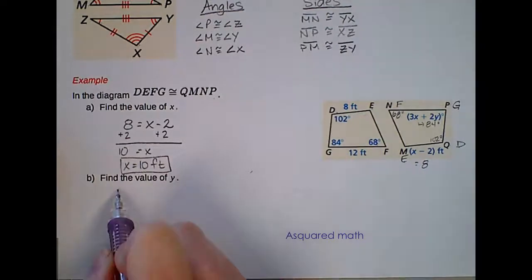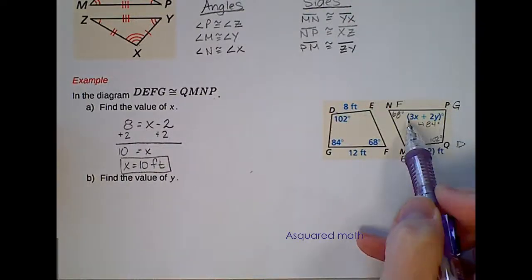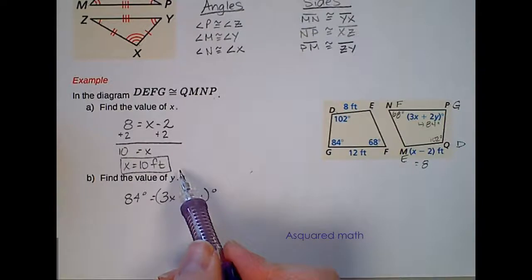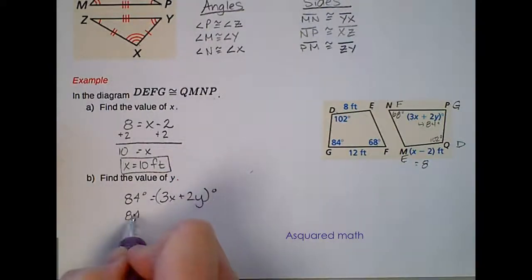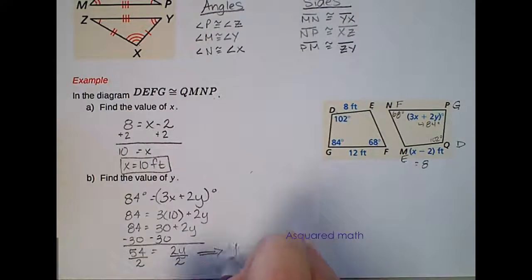Part B is asking us to solve for Y. Now this equation is the only one that has Y in it. So we can say that 84 degrees equals 3X plus 2Y degrees. We know our value for X is 10 feet. So let's substitute in 10 for X. We will get 84 equals 3 times 10 plus 2Y. 84 equals 30 plus 2Y. Subtract 30 from both sides. We get 54 equals 2Y. Still solving for Y so we need to divide both sides by 2, and we will get Y equals 27.